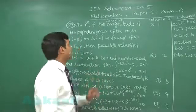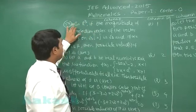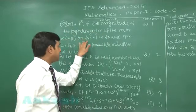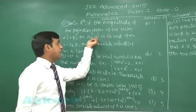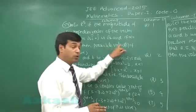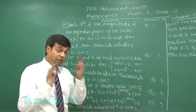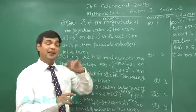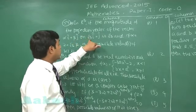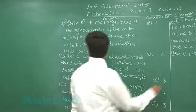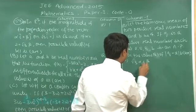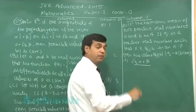Next is a matrix match type question. The first part says: if the magnitude of the projection vector of alpha i-cap plus beta j-cap on root-3 i-cap plus j-cap is root 3. The projection of vector a on vector b is a dot b-hat. So for alpha i plus beta j projected onto root-3 i-cap plus j-cap, the projection gives root-3 alpha plus beta divided by 2.